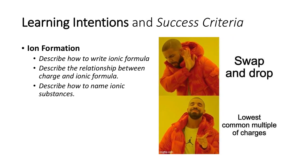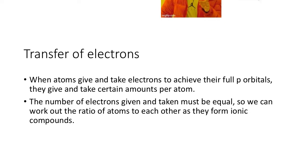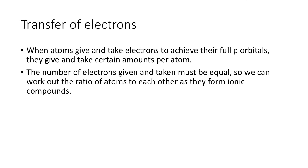So ionic bonding — we've already done a lot of the properties of ionic bonding, now we're going to have a look at the ionic formula. In ionic substances, they transfer electrons, so one atom gives and one atom takes electrons. The metals give and the non-metals take because of their difference in electronegativities.